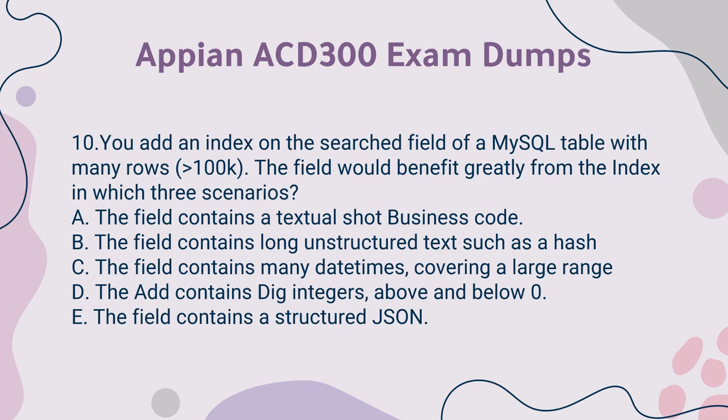Question 10: You add an index on the searched field of a MySQL table with many rows (greater than 100k). The field would benefit greatly from the index in which three scenarios? A. The field contains a textual short business code. B. The field contains long unstructured text such as a hash. C. The field contains many datetimes covering a large range. D. The field contains large integers, above and below zero.